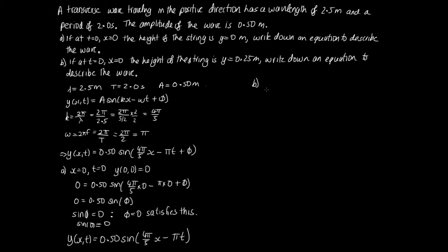For part B, we've got slightly different conditions. So we've got t equals 0, x equals 0, and our y of 0, 0 in this case is equal to 0.25. So once again, we'll substitute this into this equation here and find our phi for this case. So we've got 0.25 is equal to 0.50 times sin of 4 pi on 5 x minus pi t plus phi. And so we're substituting in here, for this x, this is 0, and this t, this is also 0.